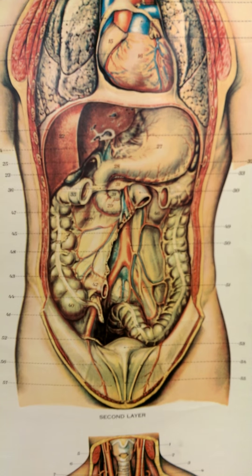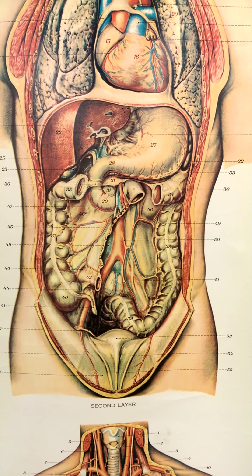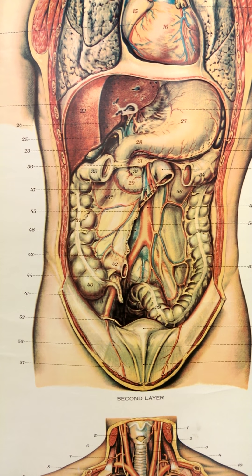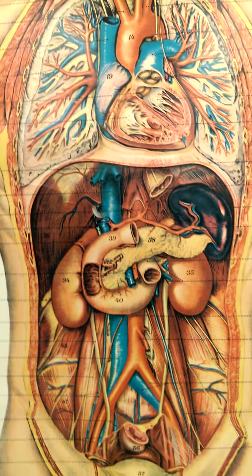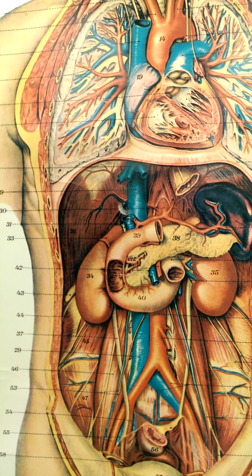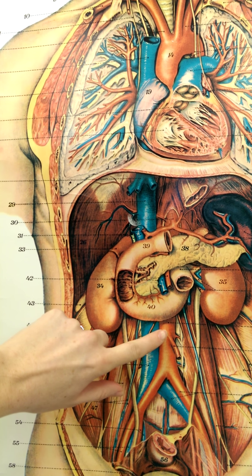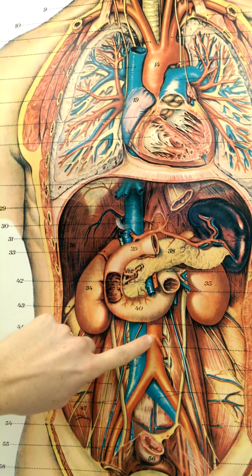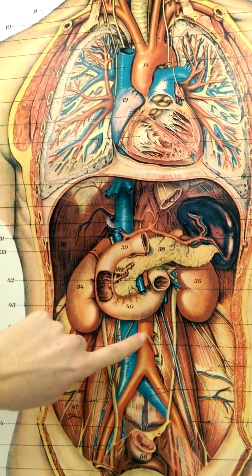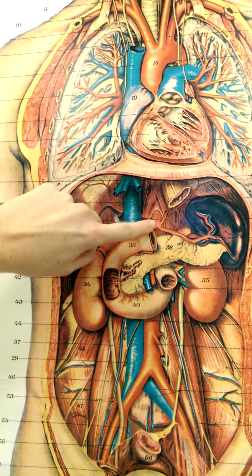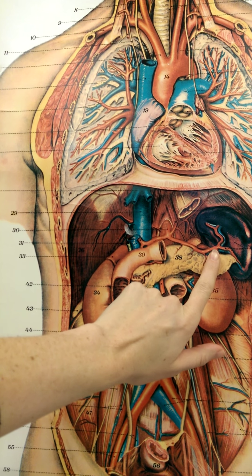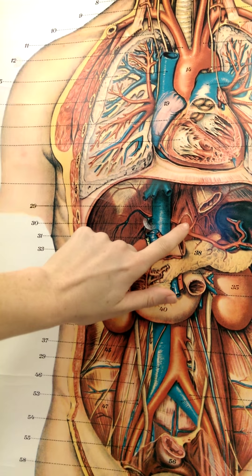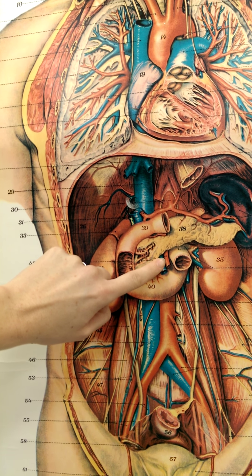I'm going to move down into the abdomen. It's a little bit tricky to see vessels there because we still have a lot of organs. Let's move to this chart where I can see more of the vessels because we've removed some organs like the stomach. The big artery I see here is my abdominal aorta, and remember that it has three arteries that branch directly from the front or anterior aspect. There's the celiac trunk, which is a short artery with three branches, and the superior mesenteric artery, though the pancreas is blocking where it comes off the aorta.